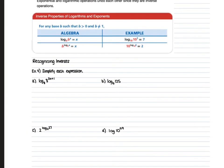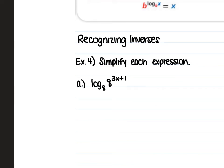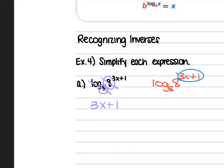When your base and your number are the same, they cancel each other out, and the only thing you have left is the exponent or whatever is out in front. For example, the base of 8 and the whole number of 8 are the same, so they cancel and you're left with 3x + 1. Alternatively, log₈ of 8^(3x+1): bring 3x+1 out front times log₈ of 8, and since 8 to the first power is 8, that's just 3x + 1.